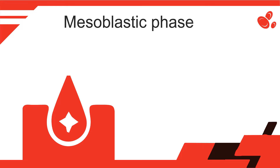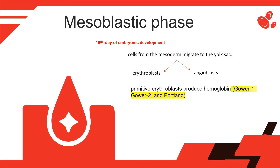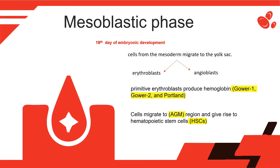Mesoblastic Phase: Begins around the 19th day of embryonic development; cells from the mesoderm migrate to the yolk sac. Some form primitive erythroblasts, while others form angioblasts, which surround the cavity of the yolk sac and eventually form blood vessels. These primitive erythroblasts produce hemoglobin Gower-1, Gower-2, and Portland, which is needed for oxygen delivery to rapidly developing embryonic tissues. Cells of mesodermal origin also migrate to the aorta-gonad-mesonephros region and give rise to hematopoietic stem cells for adult hematopoiesis.